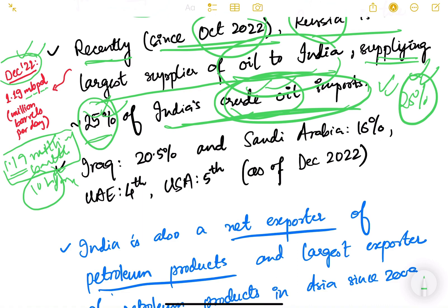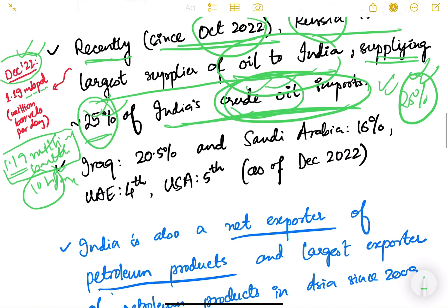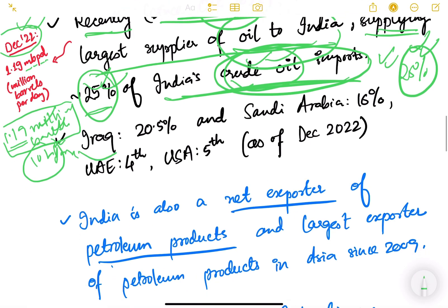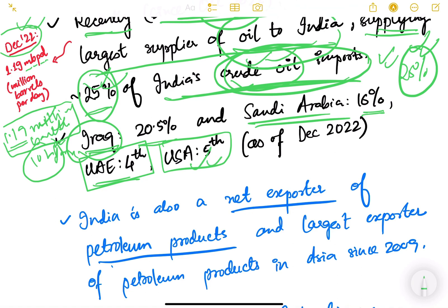Iraq is the second highest supplier at about 20.5 percent, Saudi Arabia is third at 16 percent, UAE is the fourth highest supplier, and USA is the fifth highest supplier, as of December 2022.